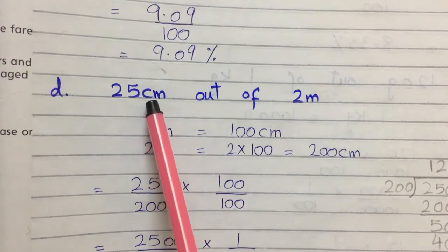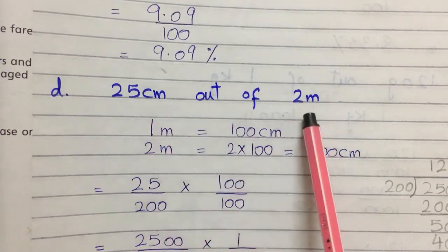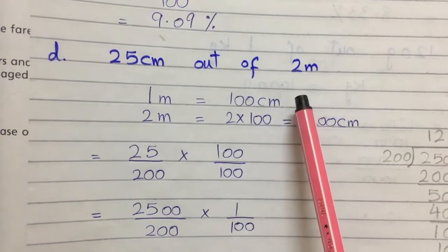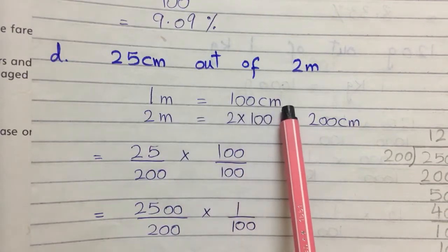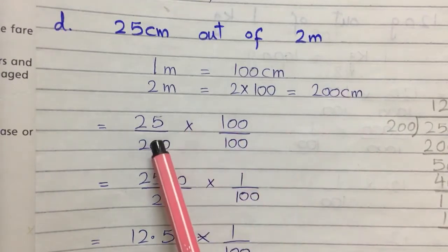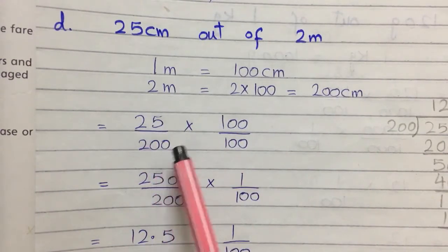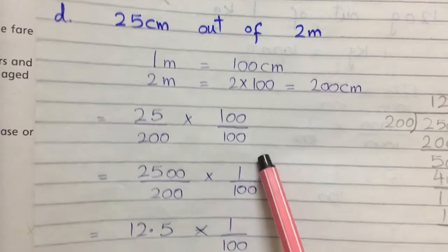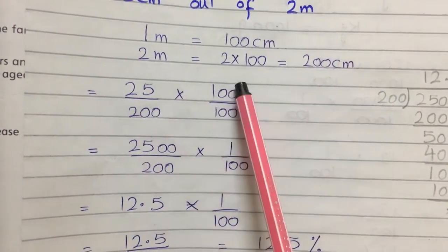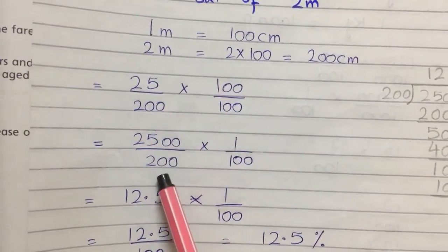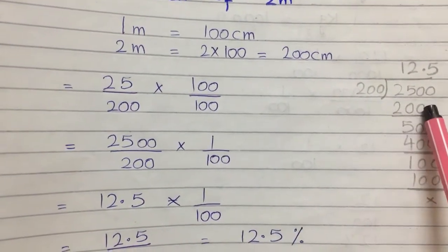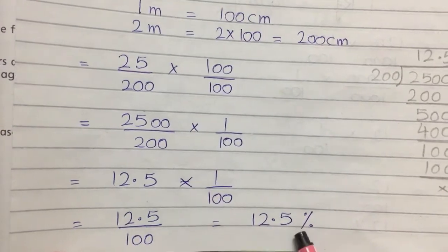Part d is: 25 centimeters out of 2 meters. We can convert centimeters to meters or meters to centimeters. We'll convert meters into centimeters, which is easier. 1 meter equals 100 centimeters, so 2 meters equals 200 centimeters. Write it as a fraction: 25 divided by 200, multiplied by 100 percent. This gives 2500 divided by 200, divided by 100, which equals 12.5 percent.